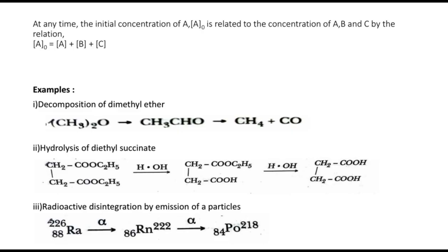Consider some examples of consecutive reactions. The first is decomposition of dimethyl ether: it decomposes to give acetaldehyde, which further decomposes into methane, carbon monoxide, and some hydrogen gas. In this case, dimethyl ether is A, acetaldehyde (CH3CHO) is the intermediate B, and methane and carbon monoxide are the final product C.